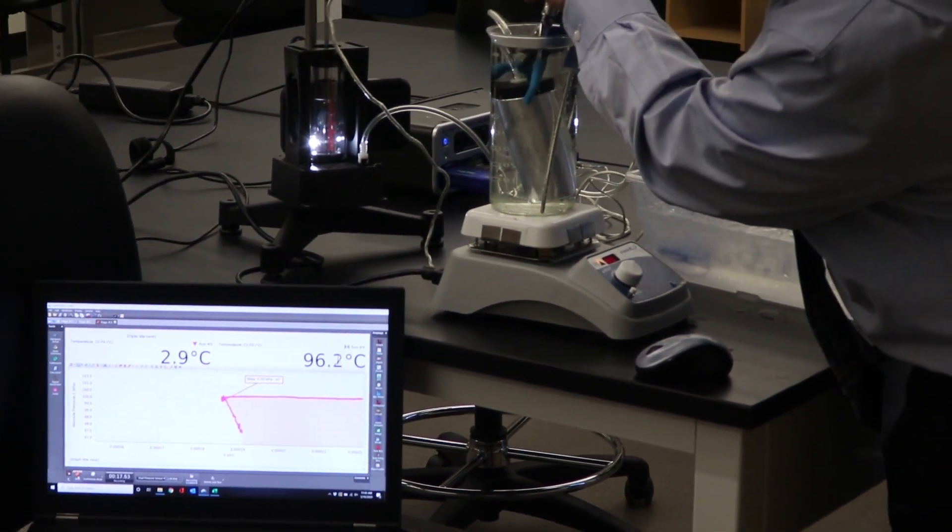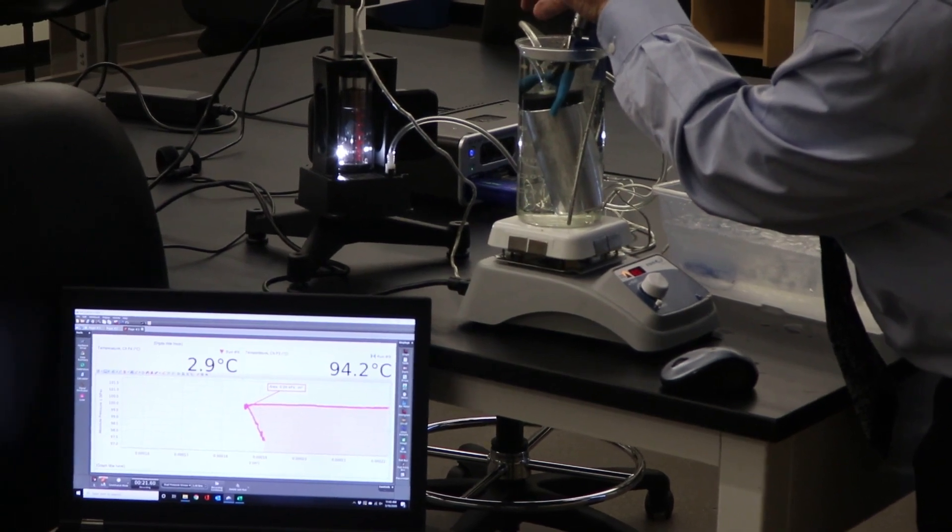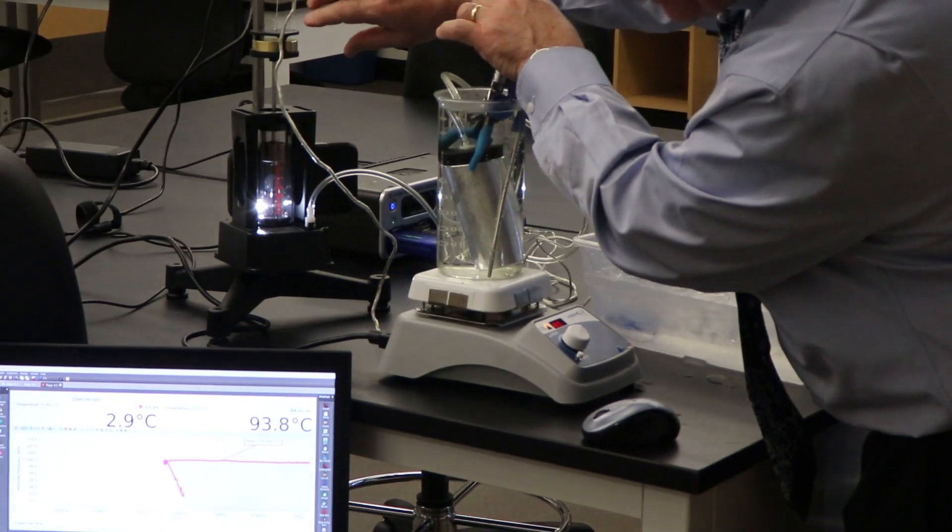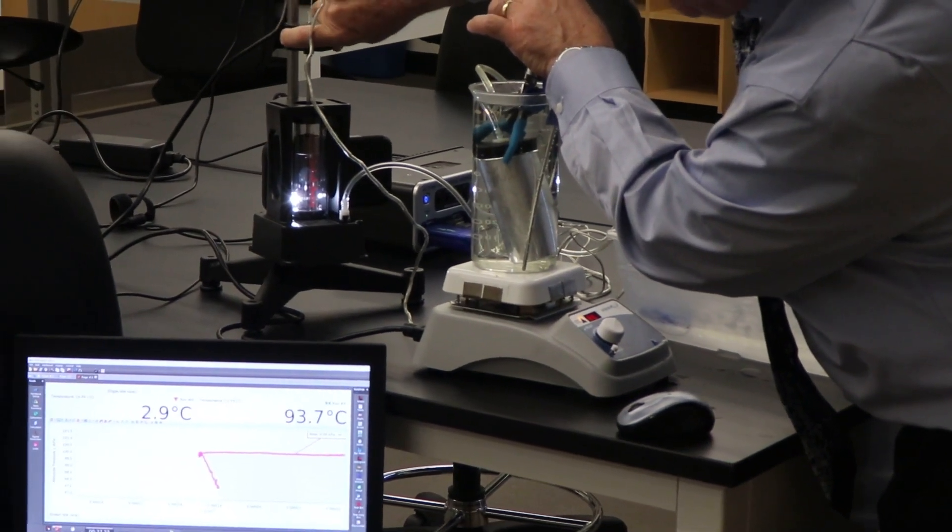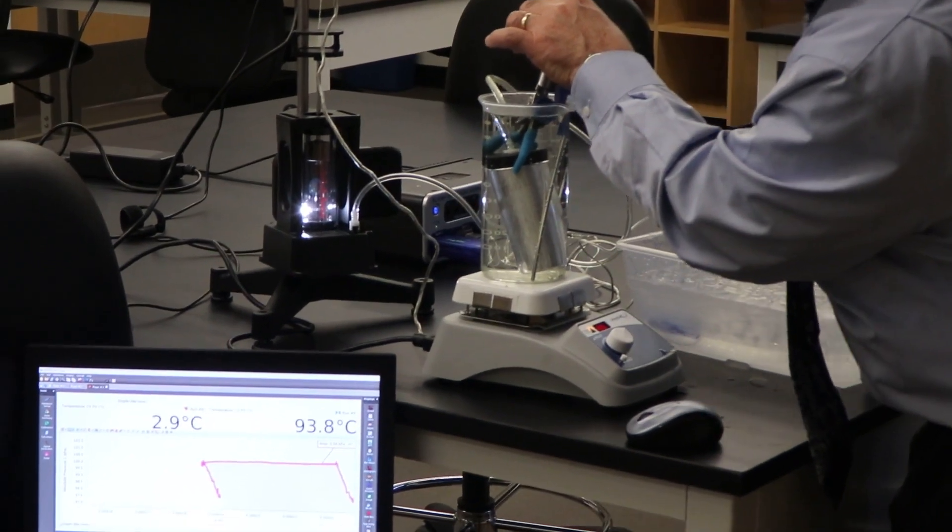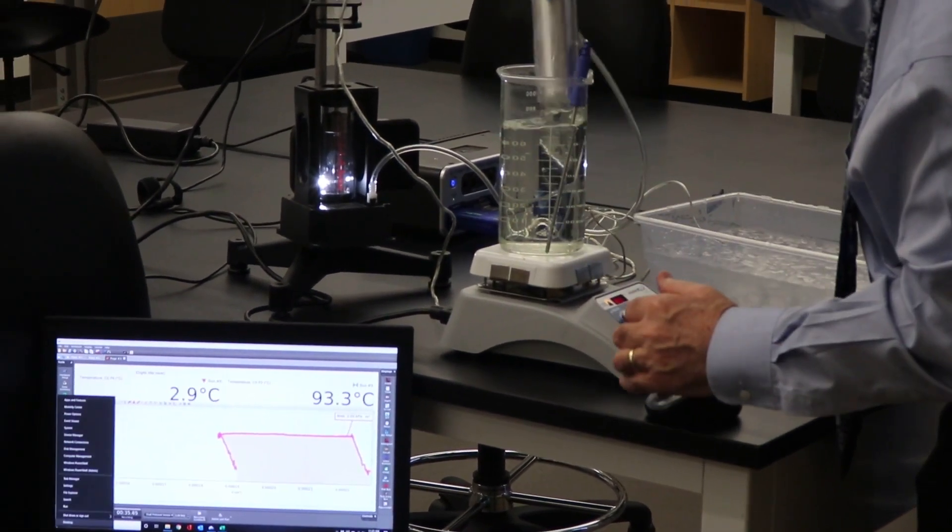Okay once it gets to the end, getting close, you can see it's still flat lining, that's all isobaric right there. Then I'm going to pull the weight out, looks like I can pull the weight out now, and then I'm going to put it back into the cold reservoir.